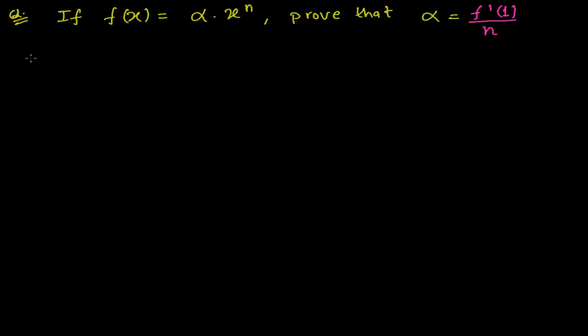Well, let me first write here our given function that is f of x. f of x is equals to alpha times x to the power n.